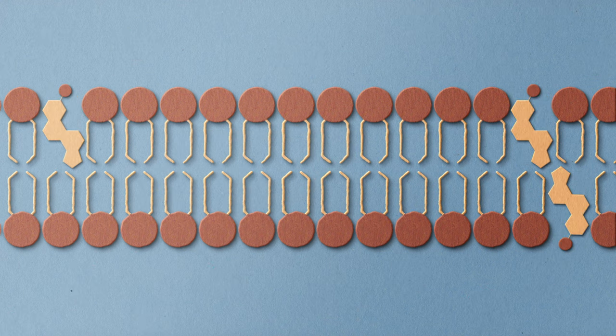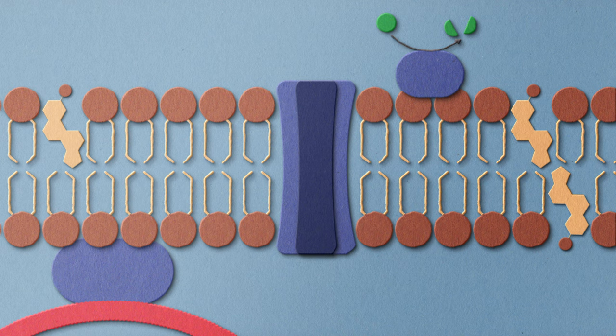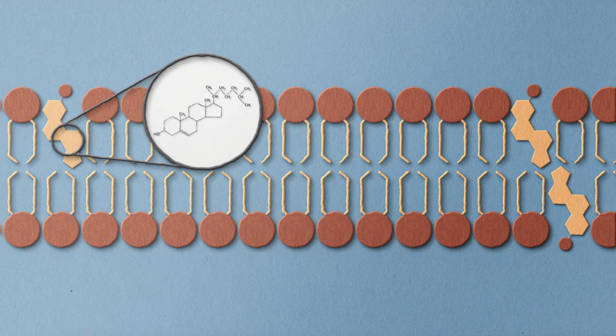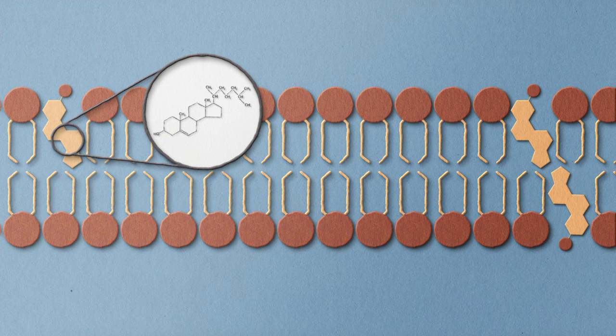The cell membrane also contains cholesterol and proteins. Cholesterol is another lipid composed of four fused carbon rings and is found alongside phospholipids in the core of the membrane.